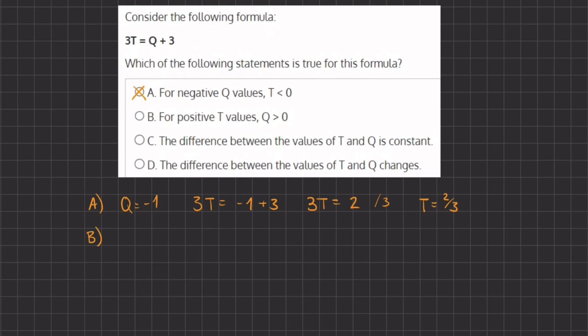For positive t values, q will be greater than 0. Now if we take the value of 1 and plug it in for t, we will get a negative value for q. We'll see this by plugging in 1 for t and seeing what value we get for q.